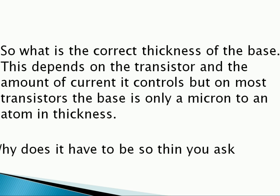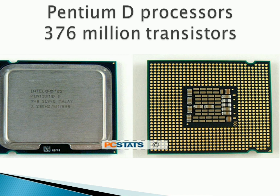Why does it have to be very thin? To make integrated circuits. In the next videos we will see how to measure the emitter, base, and collector — how to find them — and how to determine whether it is an NPN transistor or a PNP transistor.